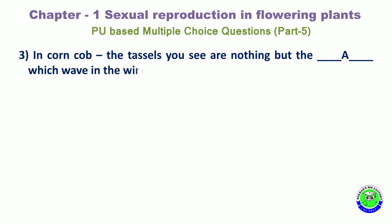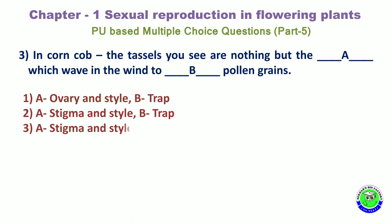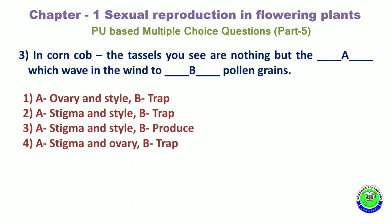Question 3. In corncob, the tassel you see are nothing but dash A, which wave in the wind to dash B pollen grains. Option 1: A — ovaries and style, B — trap. Option 2: A — stigma and style, B — trap. Option 3: A — stigma and style, B — produce. Option 4: A — stigma and ovary, B — trap. The correct answer is the 2nd option.